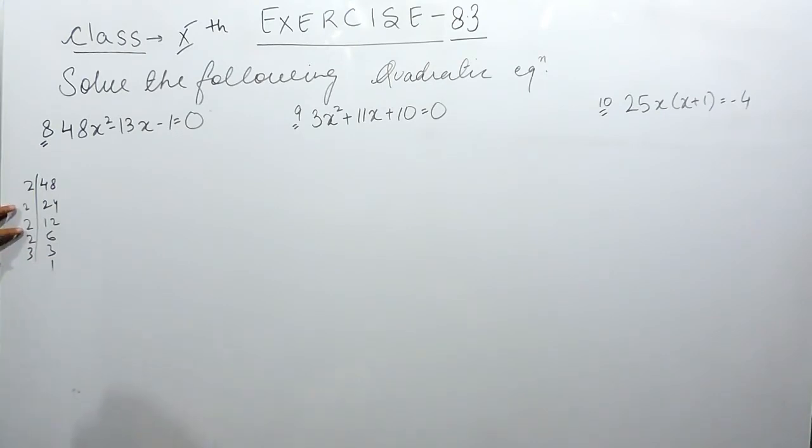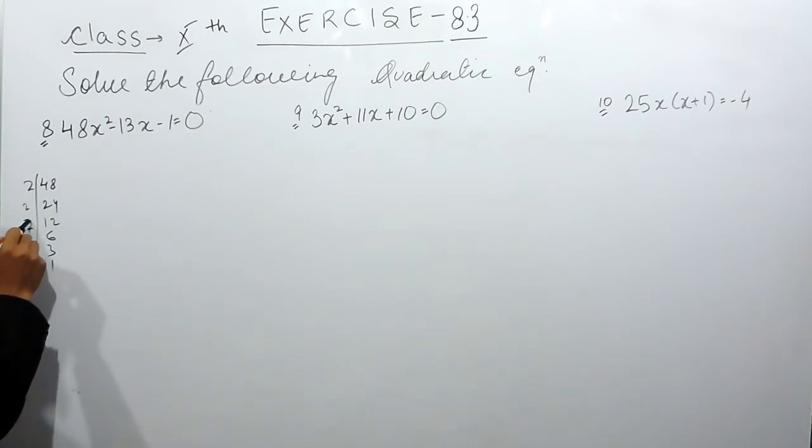It can be 2×2 is 4, 4×3 is 12. 12 plus 4 or 12 minus 4 is not possible. So 2×2 is 4, 2×8...